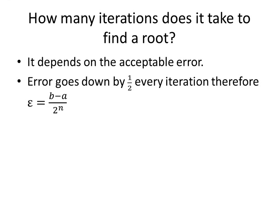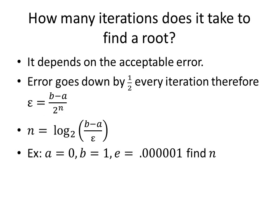And if we do some math on that, we can say that n is the log base 2 of b minus a over epsilon, which was our error. And if we apply that to an example, say we have a is zero, b is one, and our error is 10 to the minus 5, then we say that our n is going to be about 20. So if this is our case, it will take about 20 iterations of bisection to find our root.